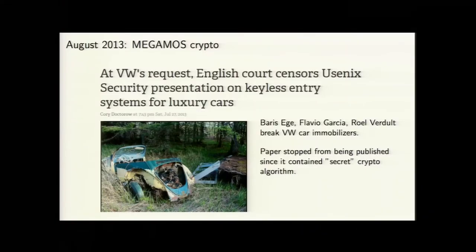In August, the USENIX conference made headlines because one talk was not being presented. Researchers Baris Egel, Flavio Garcia, and Roel Verdult showed an attack breaking car immobilizers — the company behind it, Volkswagen, sued them. An injunction in the UK prevented publication because the paper would reveal the secret algorithm. They also couldn't publish just the attack, because the attack would allow a reader to reconstruct the secret algorithm. So owners of these cars are no more secure, but the paper couldn't be published.